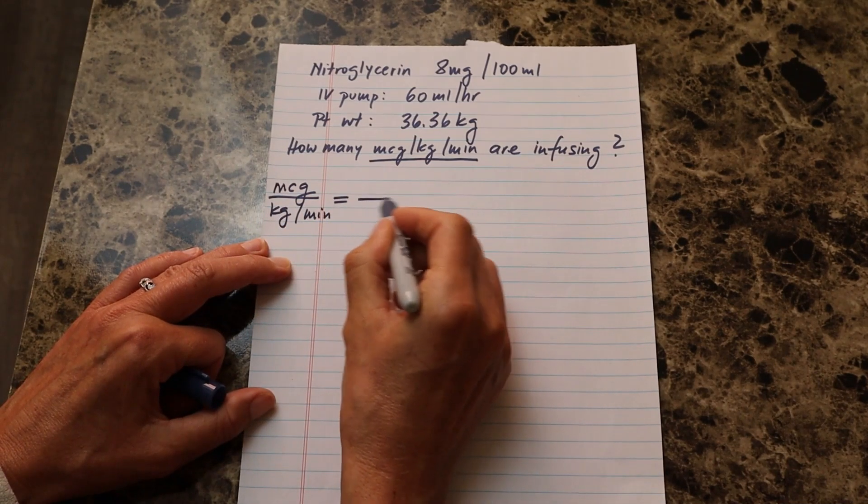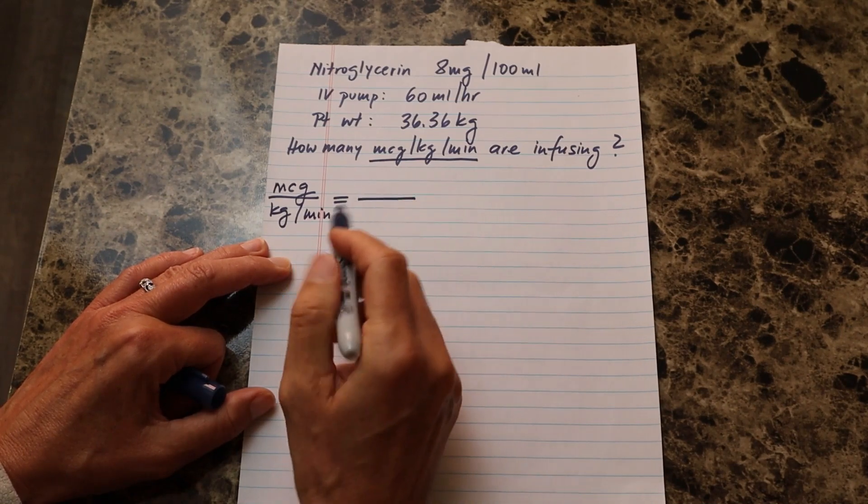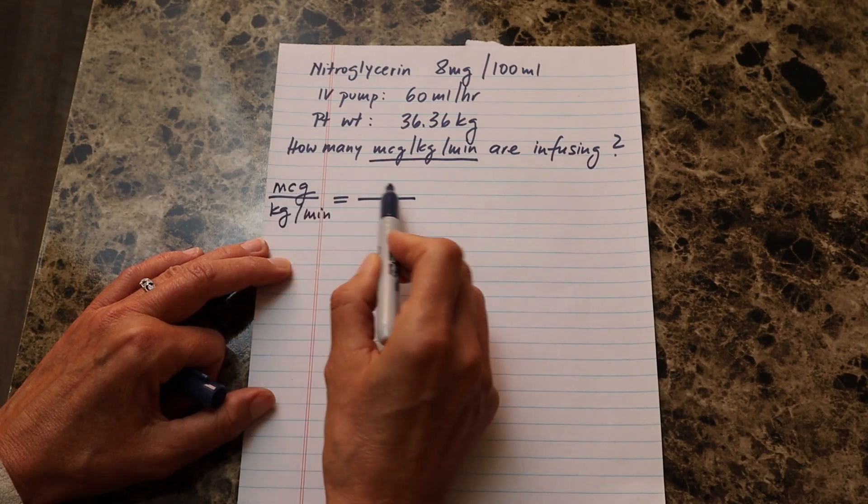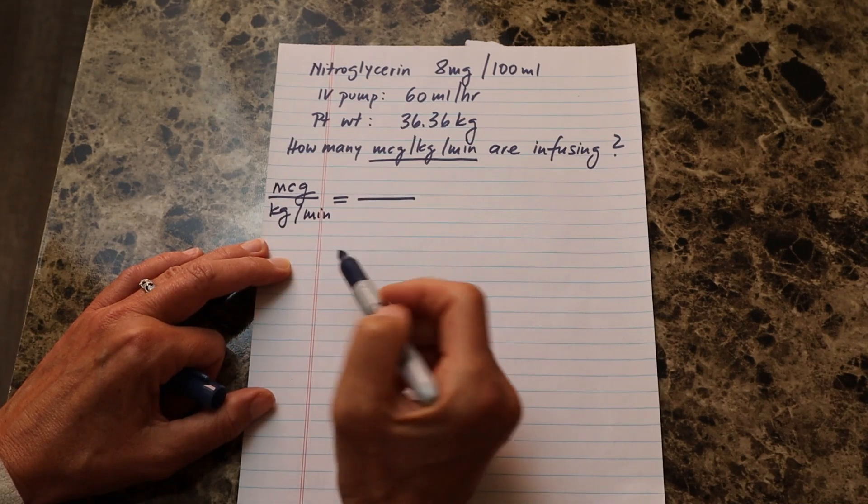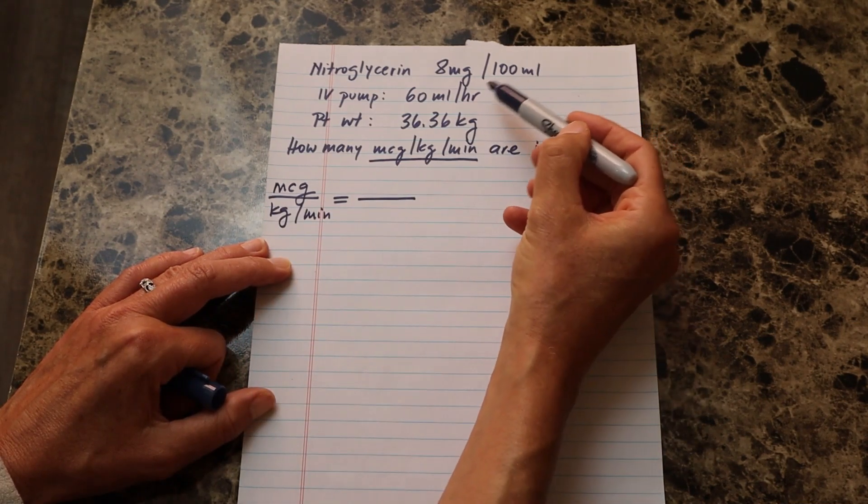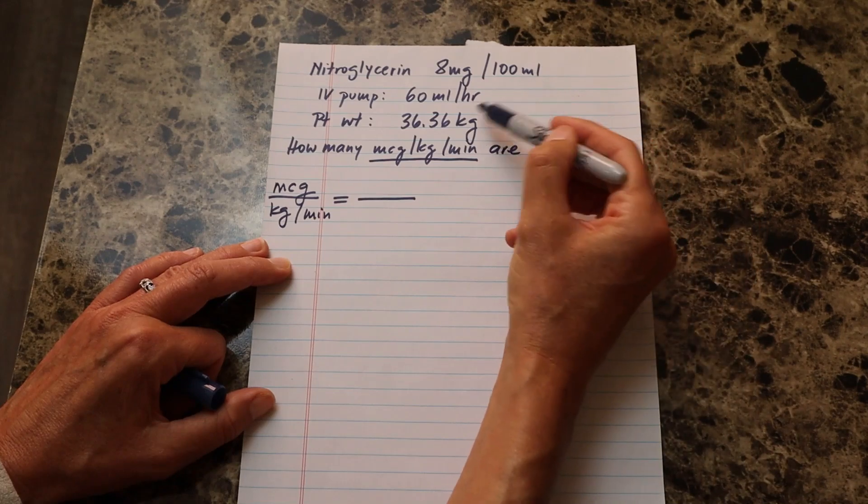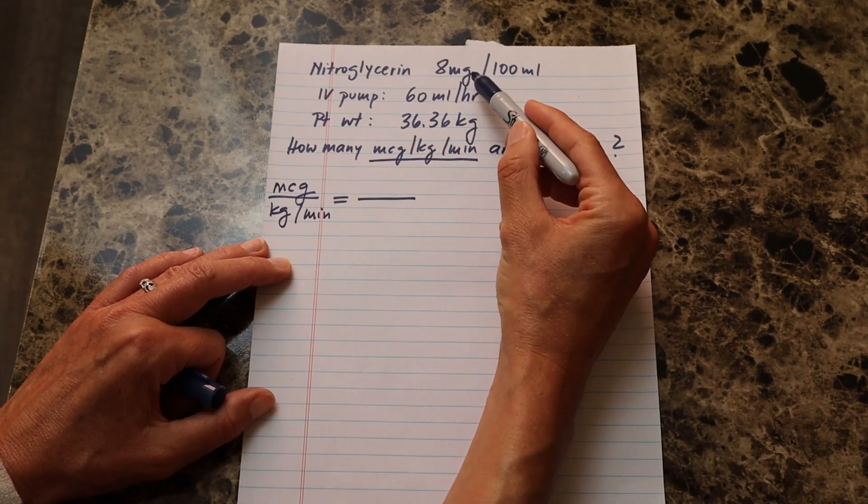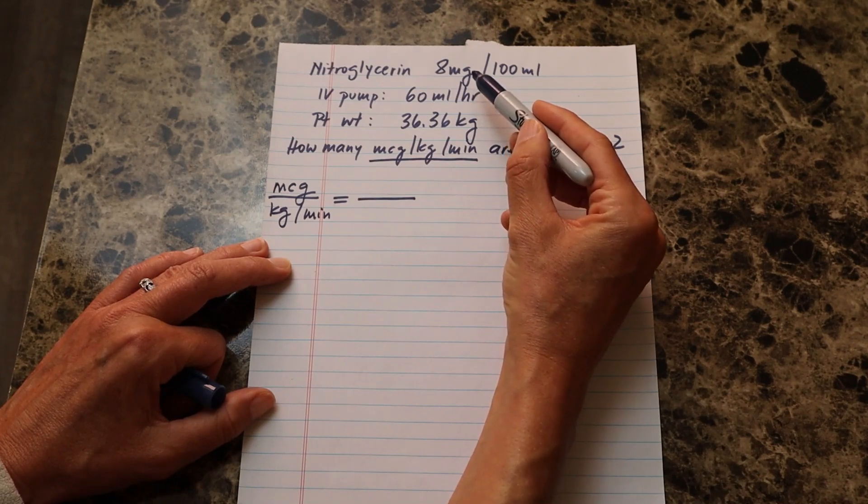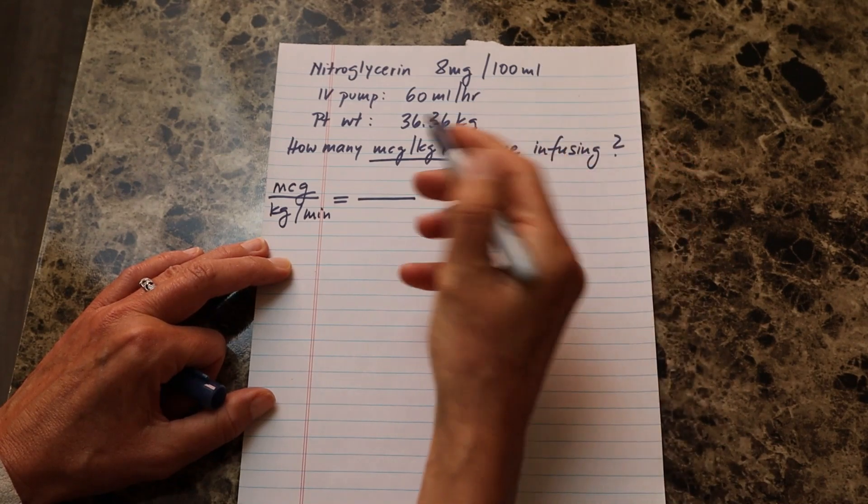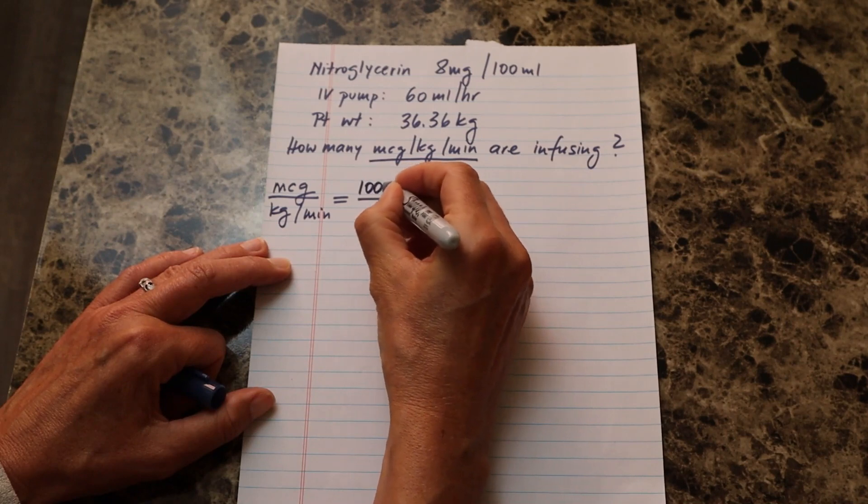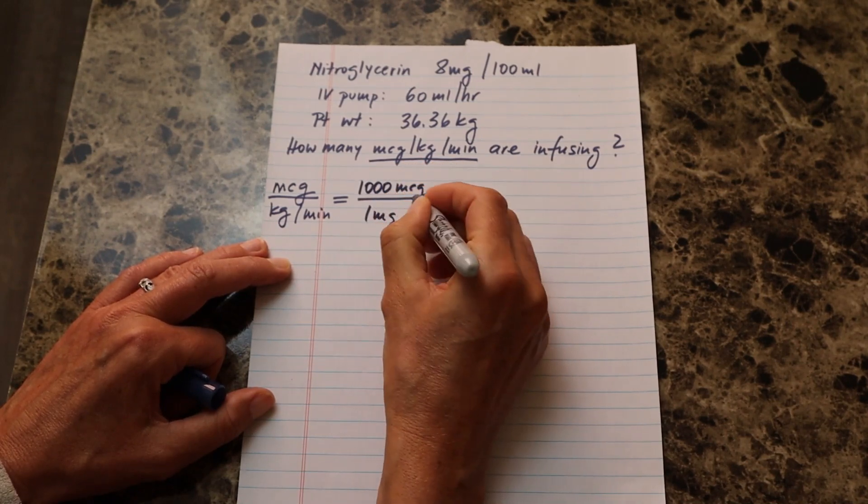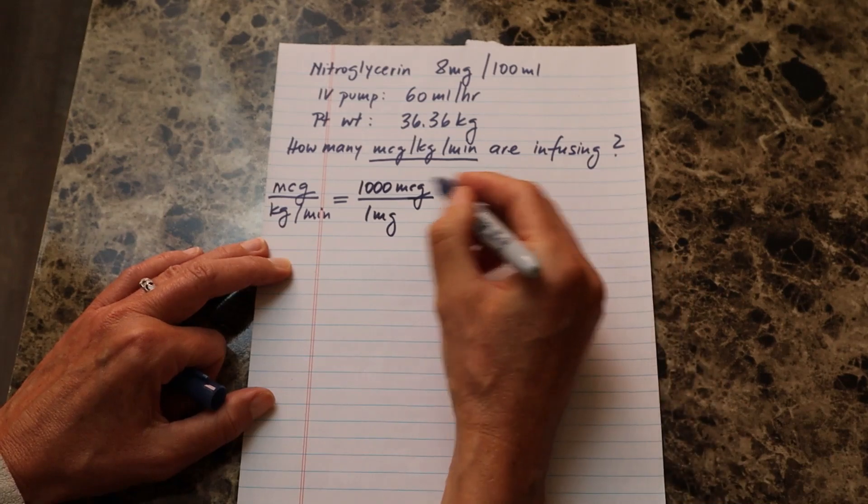And as always with our dimensional analysis, we need to find, I like to start with putting the micrograms. So whatever I'm looking for, start the dimensions out with that. Now, if I look at my problem here, I don't have any micrograms given. What I have given is milligrams, but I know the relationship from micrograms to milligrams. So 1000 micrograms is one milligram. And then I can go ahead and start my dimensions.